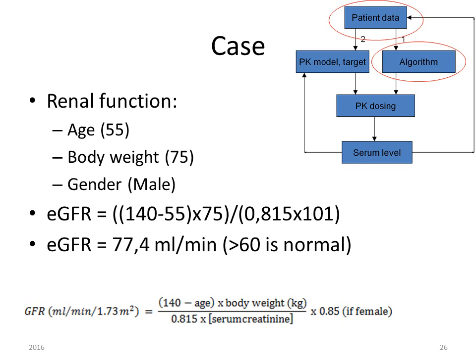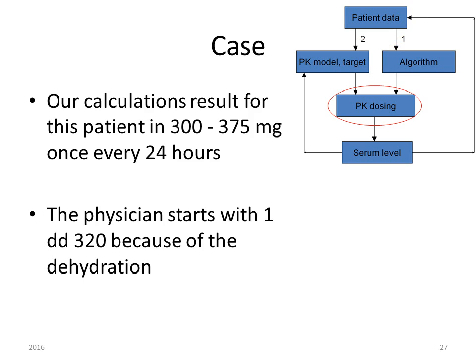For this patient — age 55 years, body weight 75 kilograms, male gender — we calculate a GFR of 77.4 milliliters per minute, which is above 60 and therefore considered normal. All calculations result in an a priori dose of 300 to 375 milligrams once every 24 hours. The physician starts with 320 milligrams once daily because of the patient's dehydration.